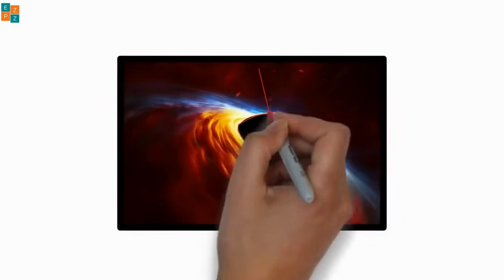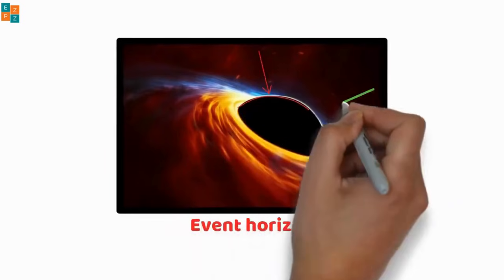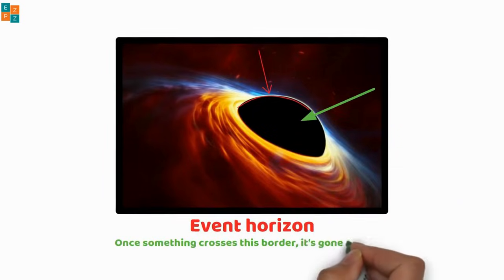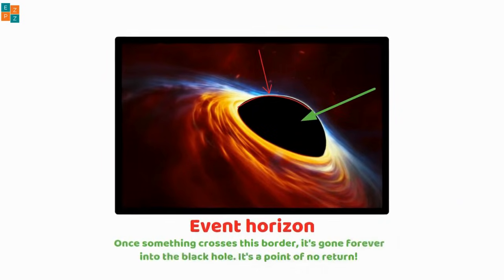Around the black hole, there's an invisible border called the event horizon. When something crosses this border, it's gone forever into the black hole. It's a point of no return.